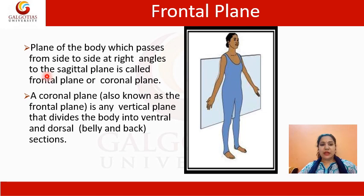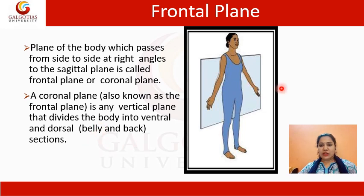The frontal plane is the plane of the body which passes from side to side at right angles to the sagittal plane, called the frontal or coronal plane. This coronal plane divides the body into front and back — the belly or back, also called the ventral and dorsal.